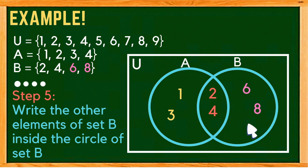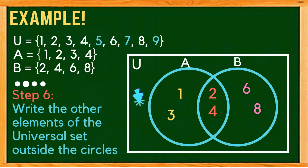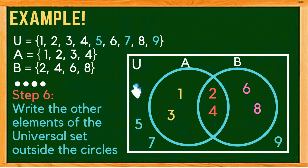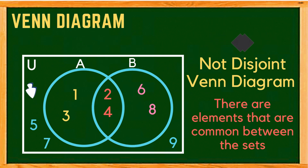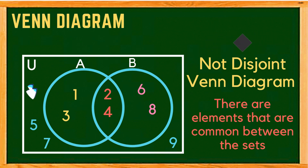Finally, write the remaining elements of the universal set outside the circles of A and B. These are 5, 7, and 9. This is now the Venn diagram for our given sets. This Venn diagram is an example of a not disjoint or overlapping Venn diagram because there are elements common between the sets.